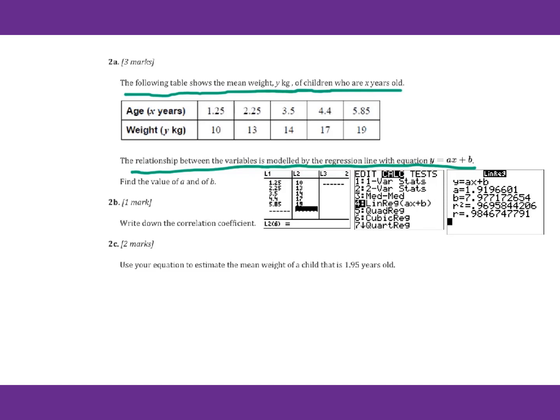First of all, we put the data into stat L1, L2. Then go to linear regression. Remember, put the diagnostic on so that you can get this r. We got a equals 1.92 and b equals 7.98.